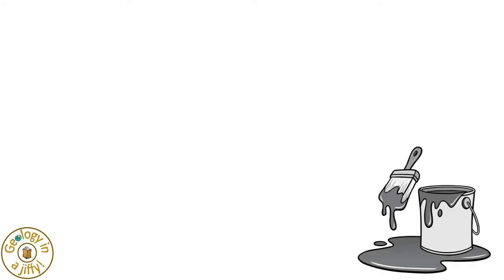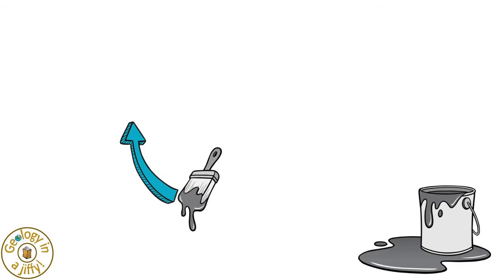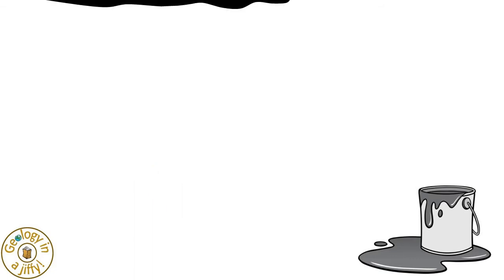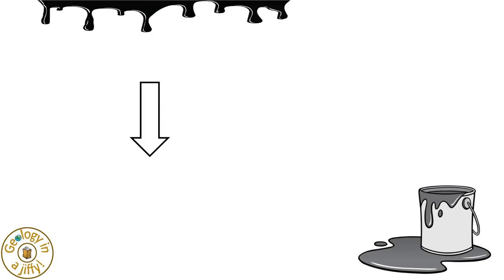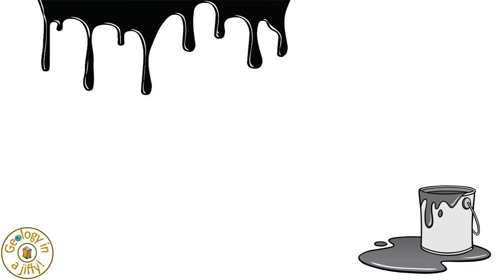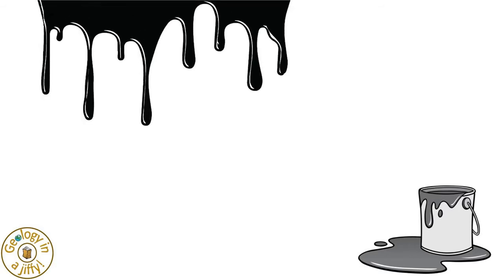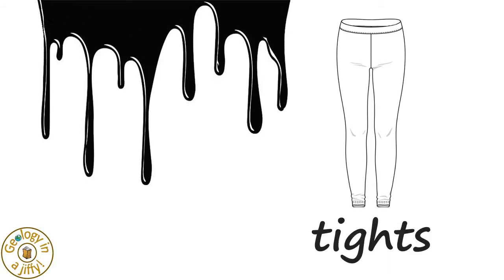To model how they form, imagine a pot of black paint. The paint then gets flicked up onto the ceiling. To start with, the paint sticks to the ceiling, but over time, the paint is pulled downwards by the force of gravity. Eventually, long, thin drips of paint extend downwards from the ceiling, much like a pair of tights hanging downwards too.